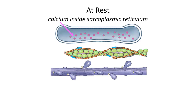The green beads of actin have the rope of tropomyosin and the blue dots of troponin. The thick filament myosin is at the bottom with the heads down. When all the myosin heads are separated from actin because tropomyosin is covering the binding sites, the muscle is at rest — there is no binding taking place.